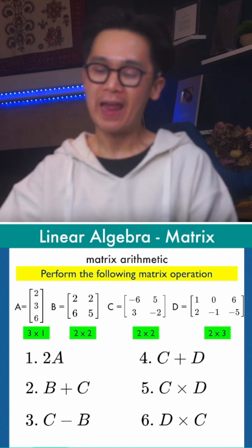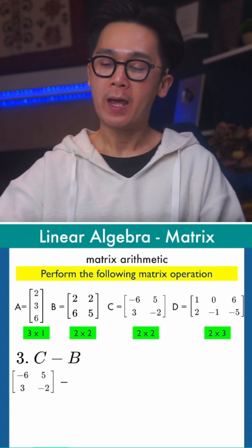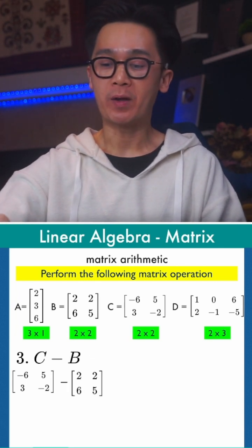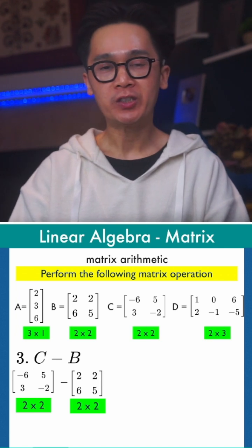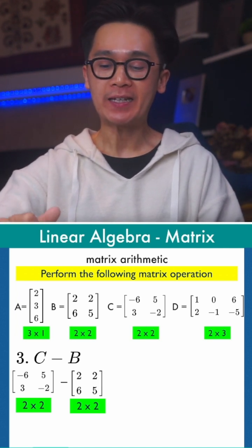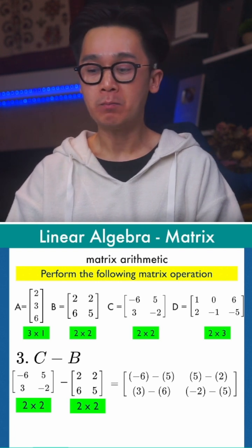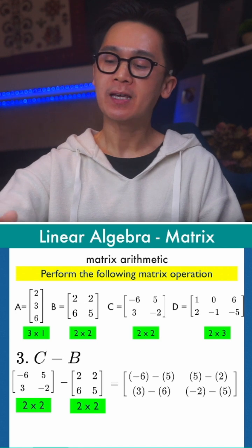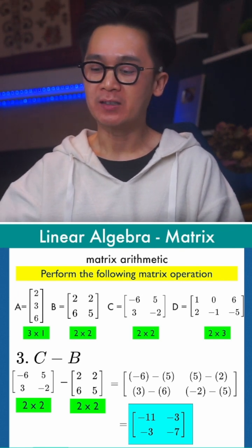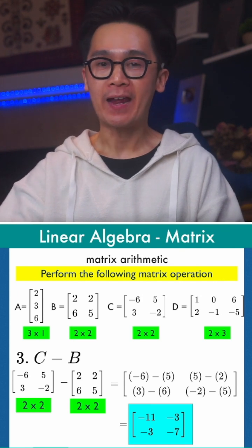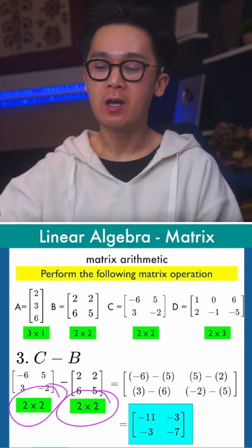Let's proceed to problem number three, which is C minus B. Matrix C is negative six, five, three, and negative two. Both are two by two matrices, so knowing the orders are the same, we can subtract them. Make sure that you know your rules for addition and subtraction of positive and negative numbers. So negative six minus two, five minus two, three minus six, negative two minus five gives us negative eleven, negative three, negative three, and seven. This is the difference between C and B.